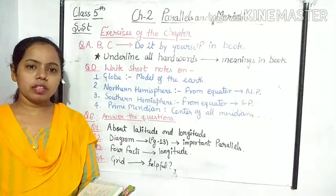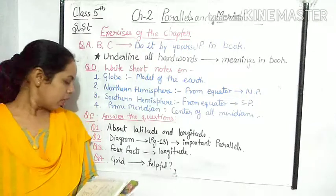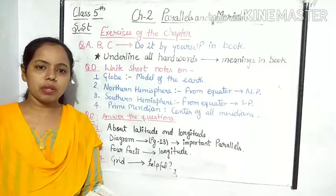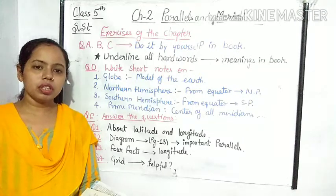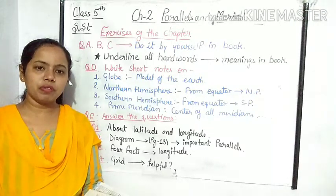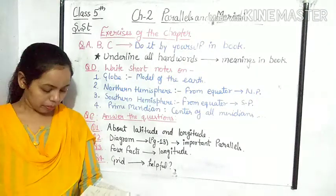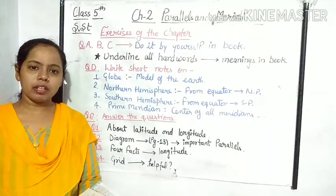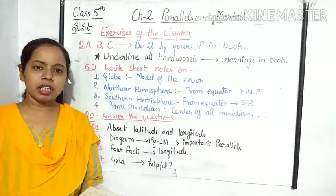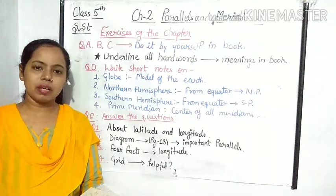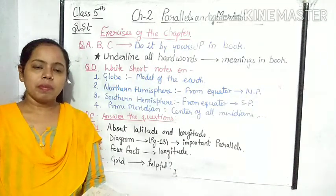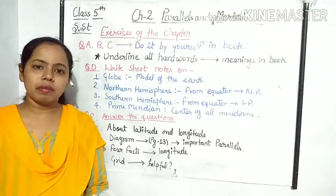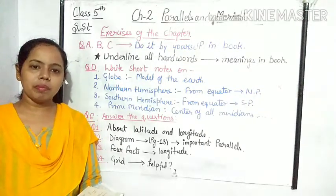Now come on to the next question. In this question, we all have to write 4 facts about lines of longitude. The lines of longitude run from north pole to south pole. They are not parallel. They are 360 in number and prime meridian is the main meridian line — it is the center of all meridian lines and helps us to number all the meridian lines.